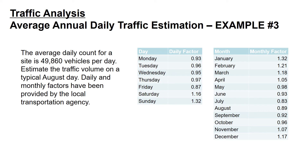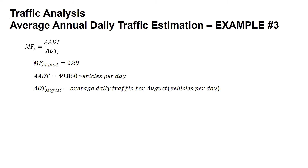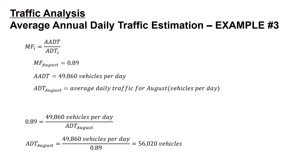In example 3, we're given an average daily count of 49,860 vehicles per day with the same tables, and we're asked to estimate the traffic volume on a typical August day. Starting with our monthly factor equation — MF equals AADT divided by ADT for the month of interest — the monthly factor for August is 0.89. Setting 0.89 equal to 49,860 vehicles per day divided by the ADT in August, we solve to get 49,860 divided by 0.89, giving us an ADT in August of 56,020 vehicles per day.